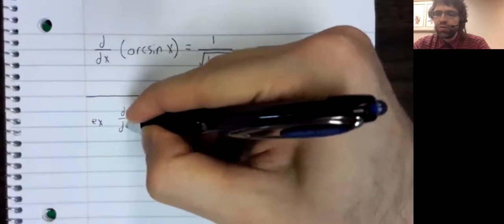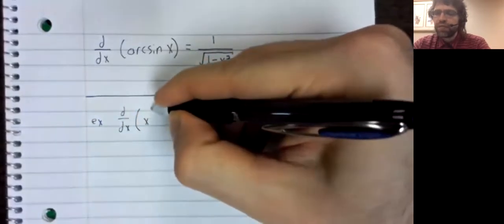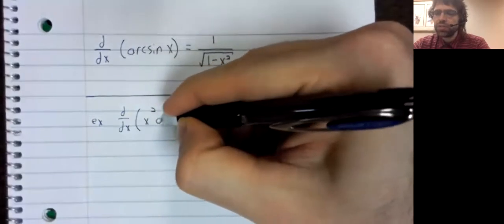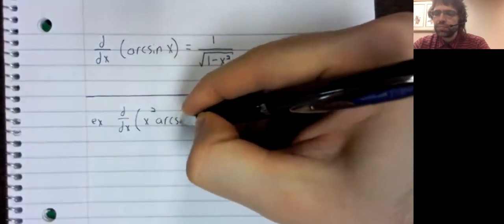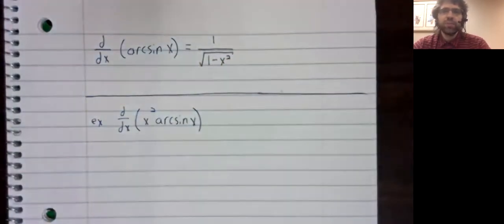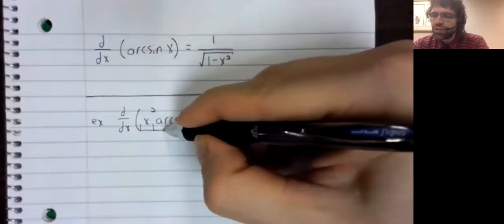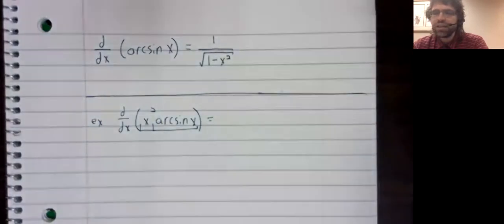So for example, if we have a product involving an arcsine, we use the product rule. I mean, it's just a derivative of a product. Our functions are that and that.